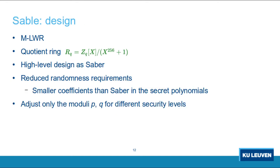The third scheme in our suite is Sable. For Sable, we use the same construction as Saber but introduce some changes: we reduce randomness requirements by choosing a narrower distribution for the coefficients of the secrets, and we adjust the moduli p and q. In fact, we use only the moduli p and q to tune the security level of the scheme. I will now leave the floor to Suparna, who will talk about the security parameters and software implementations.